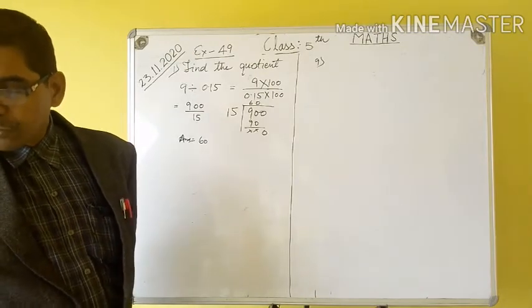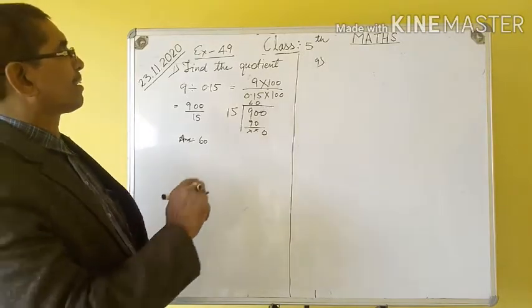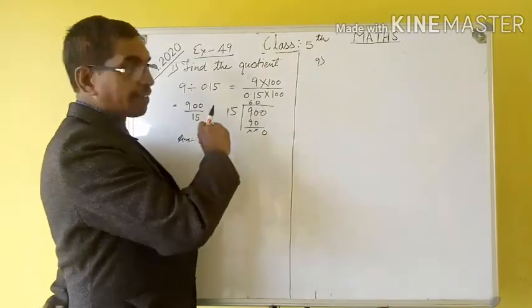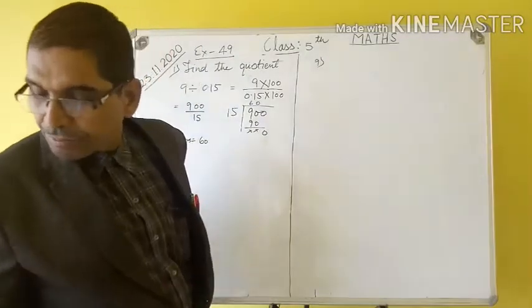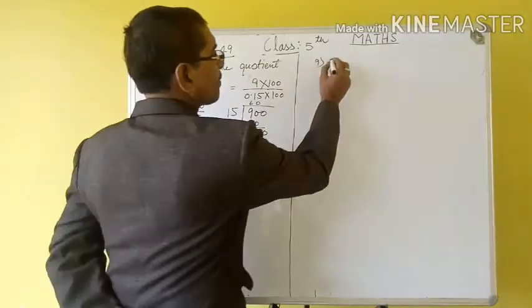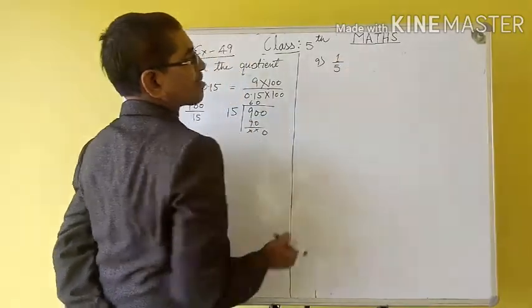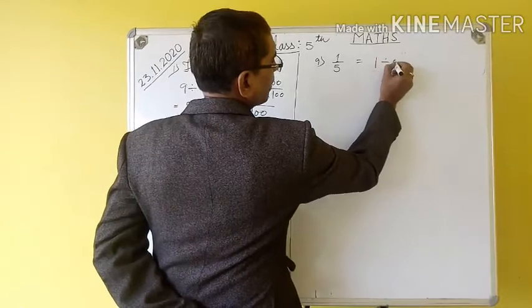Next question is: convert the fraction into decimal. How can a fraction be converted to decimal? First question: 1 upon 5. This fraction, how can it be converted to decimal? This is equal to 1 divided by 5.